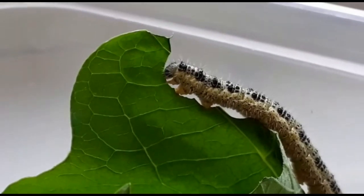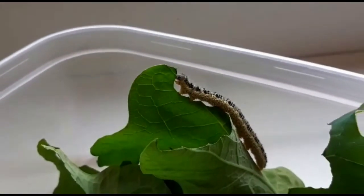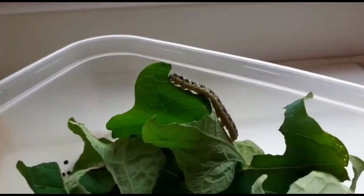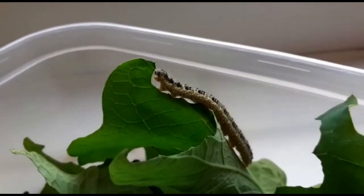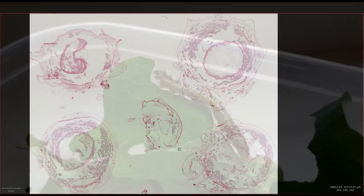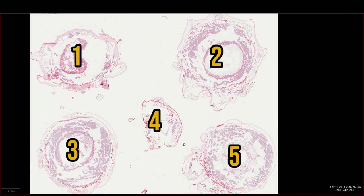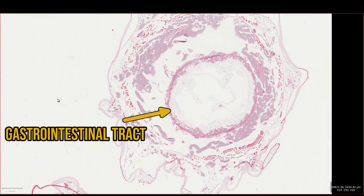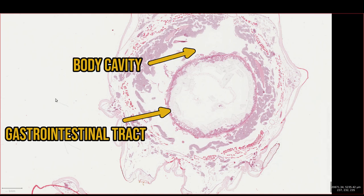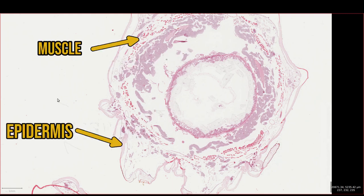Of course caterpillars are too small and gooey to do a proper macroscopic autopsy on, so I chopped them up into transverse sections and sent them off to the lab to be processed. This slide here is the result. There are five round sections corresponding to five slices through a caterpillar at different levels. In the middle we'll have a gastrointestinal tract, surrounding that a body cavity with whatever other organs caterpillars have, then a circumferential layer of muscle, and an epidermis with a cuticle.